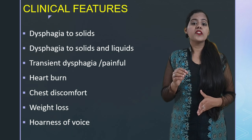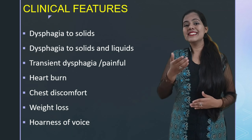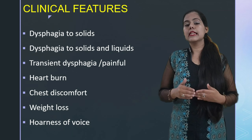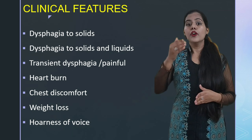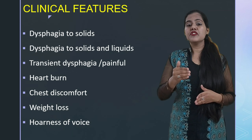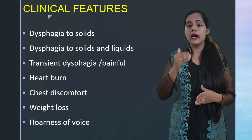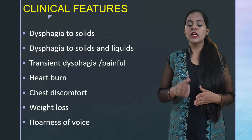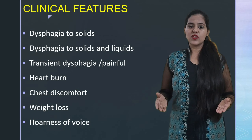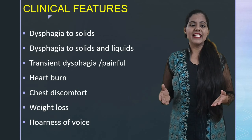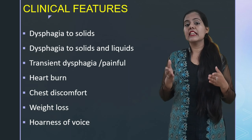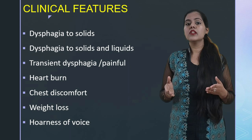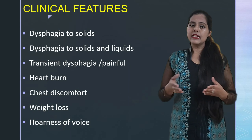Dysphagia with nasal regurgitation suggests ninth and tenth cranial nerve palsy as the main cause. Hoarseness of voice along with dysphagia suggests recurrent laryngeal nerve palsy as the main cause. That covers the clinical features of dysphagia.